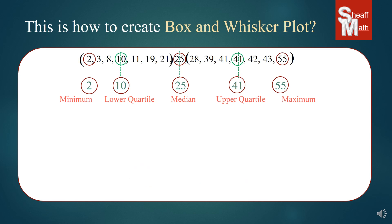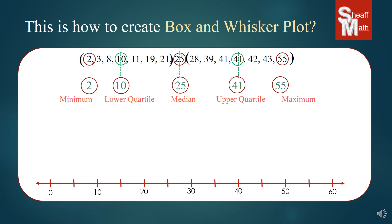Next step — we are going to actually create the box plot. First we have to make a number line. I made my number line from zero to 60, going by tens, although the tick marks go by five. The reason I picked zero and 60 was because I looked at the low number and the high number — two and 55 — and went just below two and just above 55 to get zero and 60. You can make your number line any way you want; you just want to make sure that you get all of your data spread out on your number line.